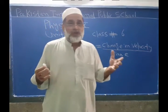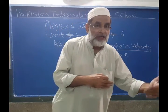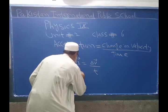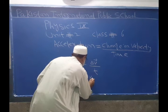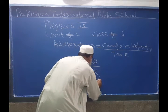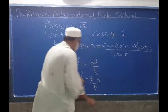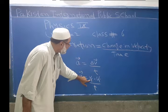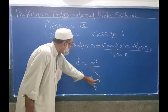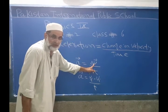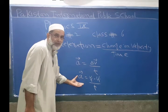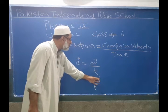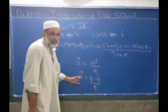Change in velocity means final velocity minus initial velocity. A is equal to change in velocity: final velocity Vf minus initial velocity Vi, divided by t. Vf means final velocity, Vi means initial velocity. The difference of final velocity and initial velocity divided by delta t is the change in velocity. If we have given initial velocity, final velocity, and time, we can find acceleration mathematically.